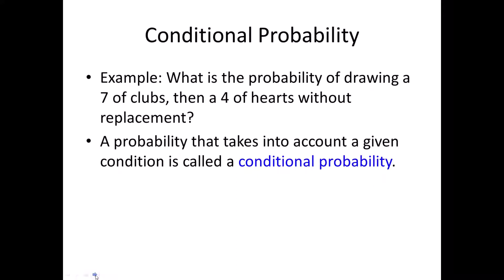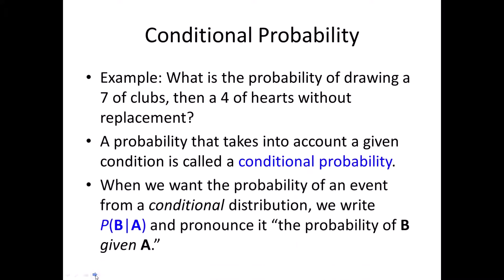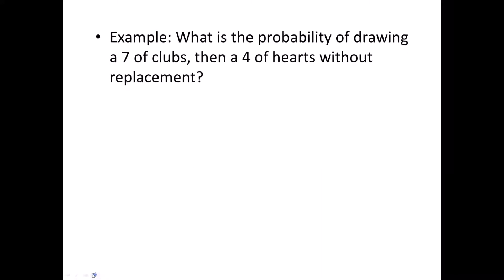This is just to introduce the notation. When we want the probability of an event from a conditional distribution, we write it like this: the probability of event B given that A occurred. The bar here means 'given that' — that's the phrase, or anything that implies a condition. We just say 'probability of B given A.'